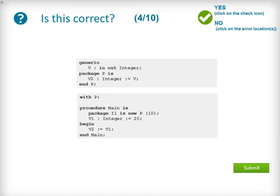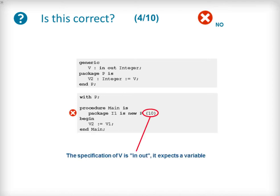The next question presents a new generic package specification P that has a read-write variable V in the contract and a publicly available integer variable V2 that is initialised with the value of the parameter at instantiation. Our procedure main attempts to instantiate P as the package I1 with the value 10 as the generic contract variable. The code is incorrect and will fail to compile. The specification of the generic package P states the variable V is in-out, and therefore any instantiations must ensure a read-write variable is passed as the argument.